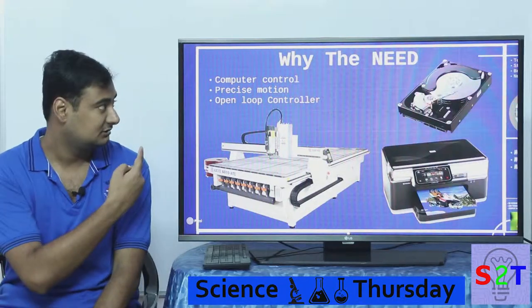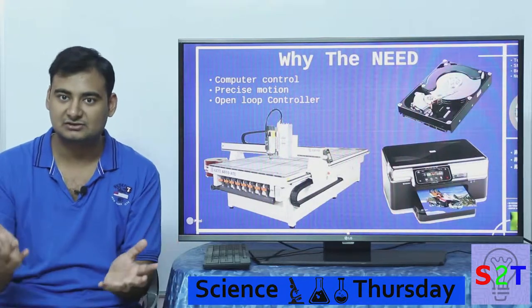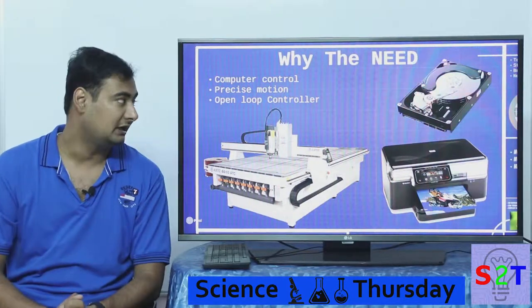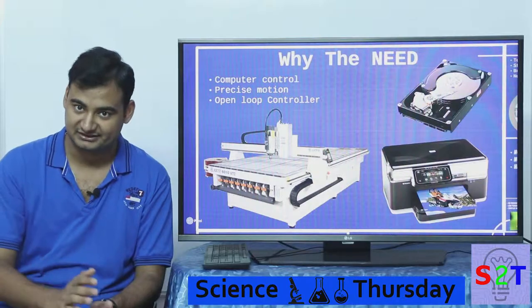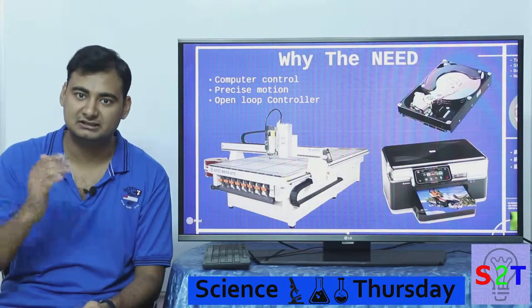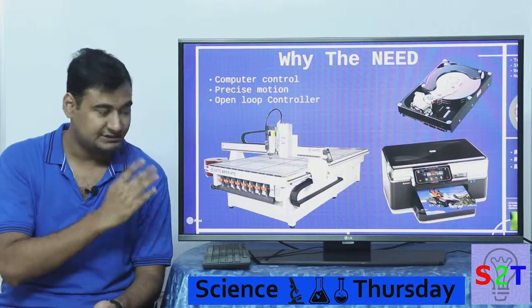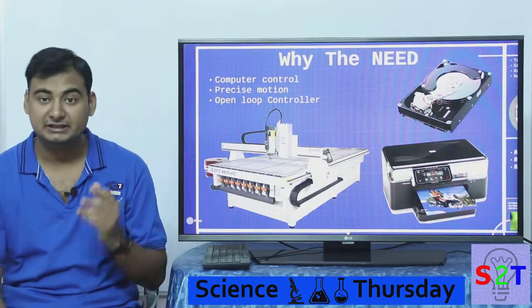We need something known as computer control. You must have also heard normal things like this air conditioner is computer controlled, this refrigerator is computer controlled, this washing machine is computer controlled. All they are meaning is that computers can affect the operation of the equipment. Now we need precise motion for this application.